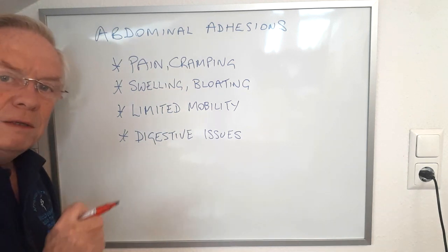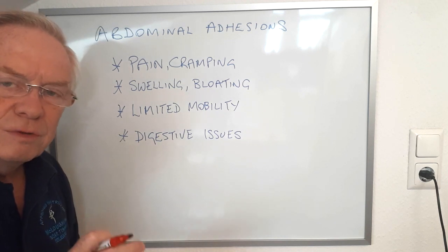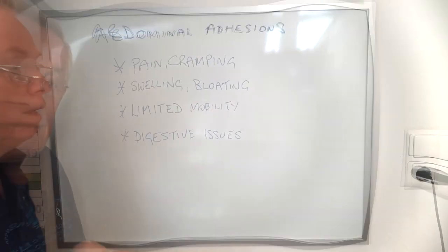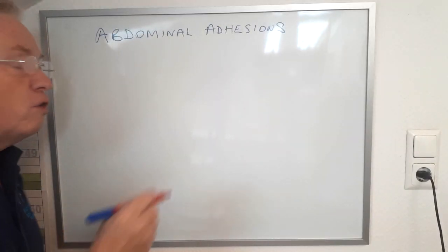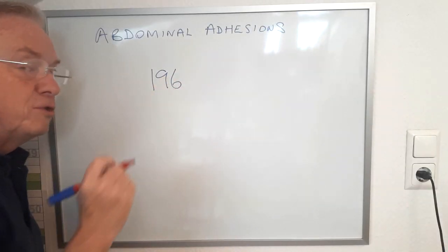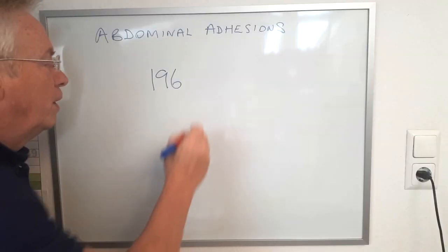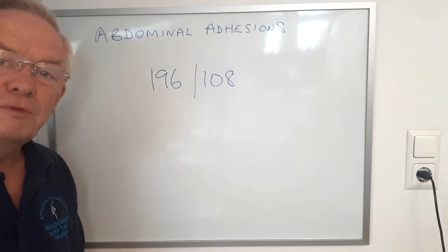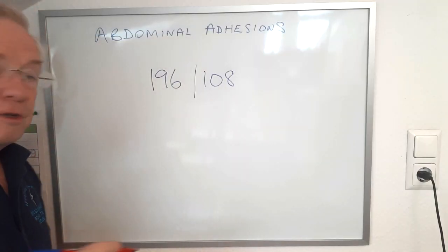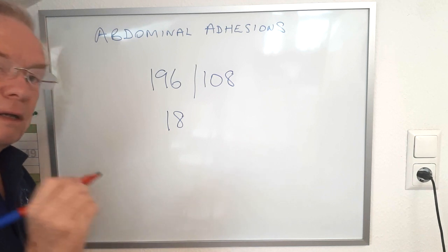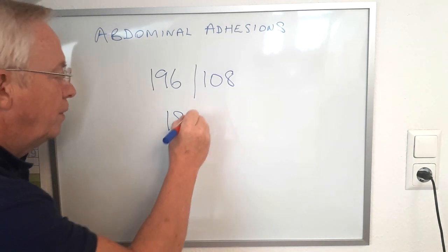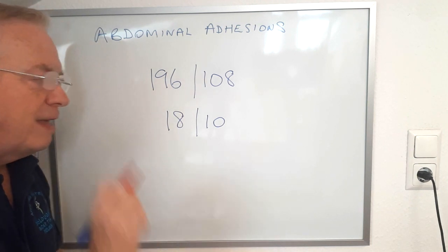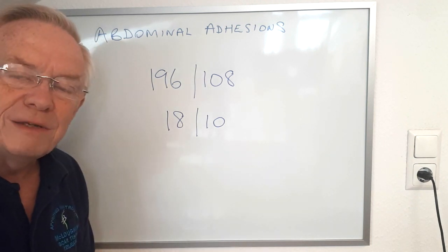It may interest you to know that abdominal adhesions are a very common cause of small bowel obstruction. In fact, in one study of 196 people that had small bowel obstruction, 108 of those were caused by abdominal adhesions. In another study of 18 people who had small bowel obstruction, 10 of those people had never undergone abdominal surgery.